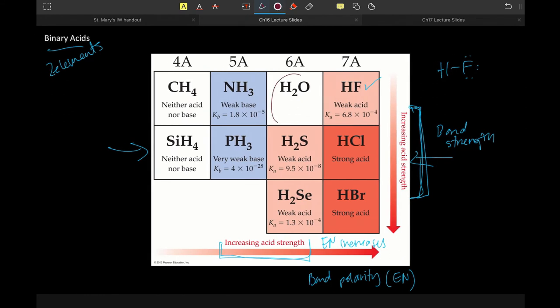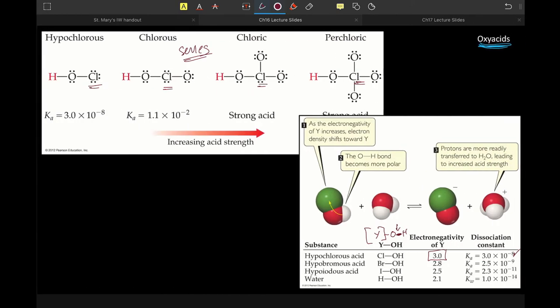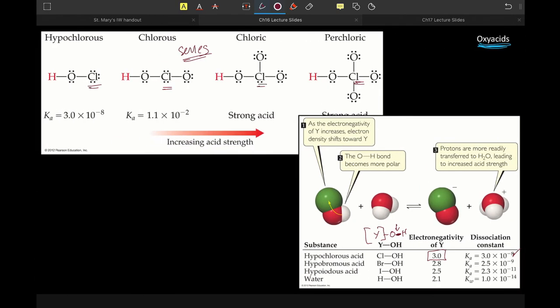Especially if you look at—oxygen is right here. If we look at the proximity of oxygen to fluorine, very electronegative. So the more oxygens that polyatomic ion has, the more electron density is pulled away from that hydrogen, the more readily that hydrogen is lost.